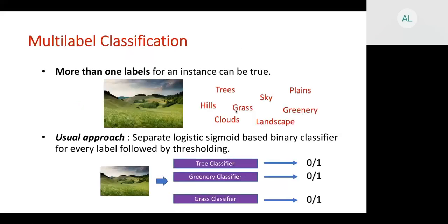The next problem is multi-label classification. In standard classification, a particular class is predicted as true for an instance. In multi-label classification, more than one label can be true for a given instance. For example, given an image of a landscape, many labels — trees, hills, grass — are simultaneously true. The label space could be thousands or millions, but only a few labels are true.